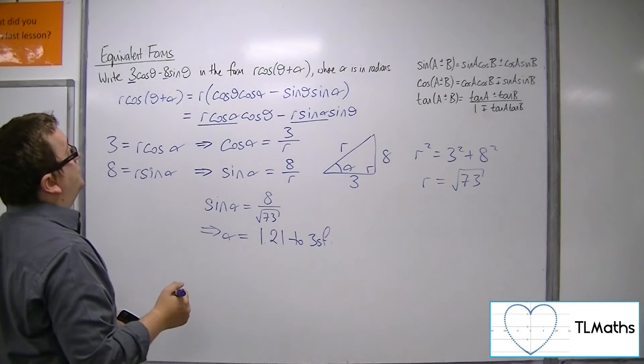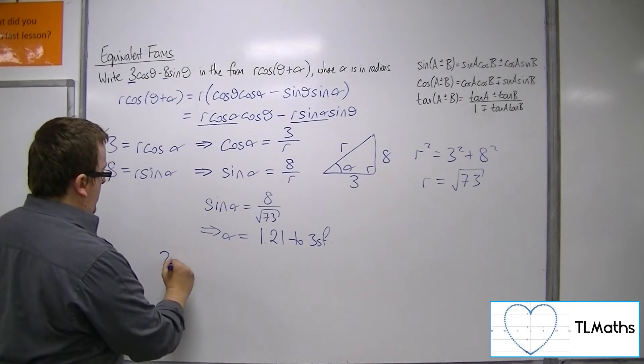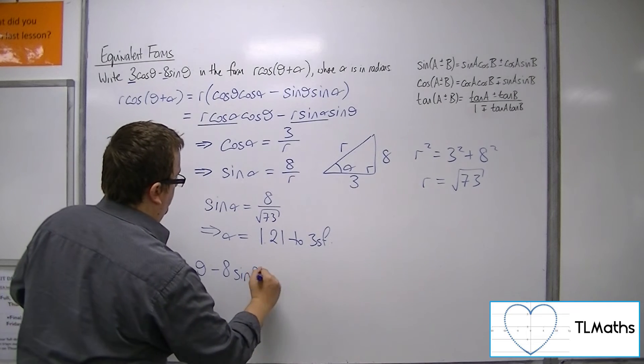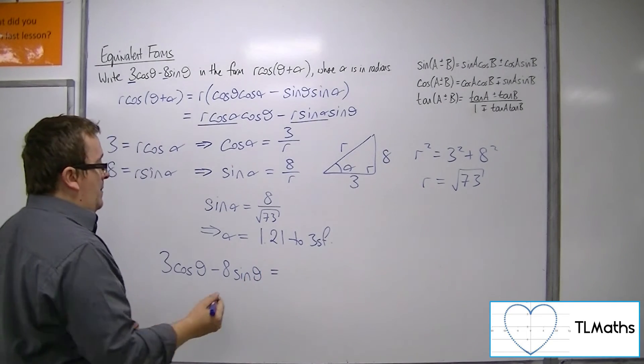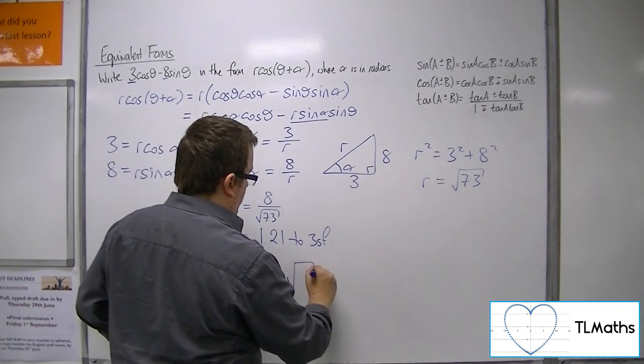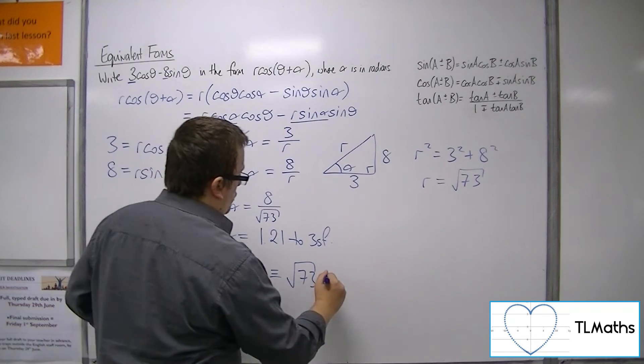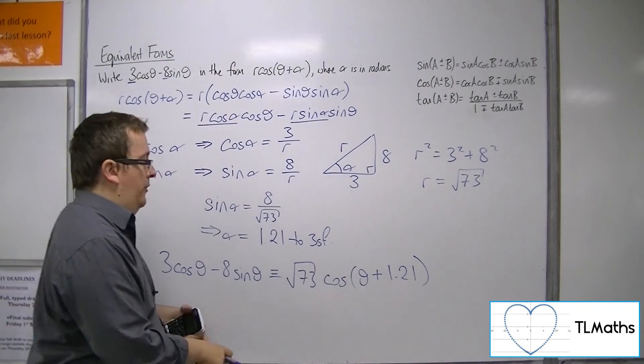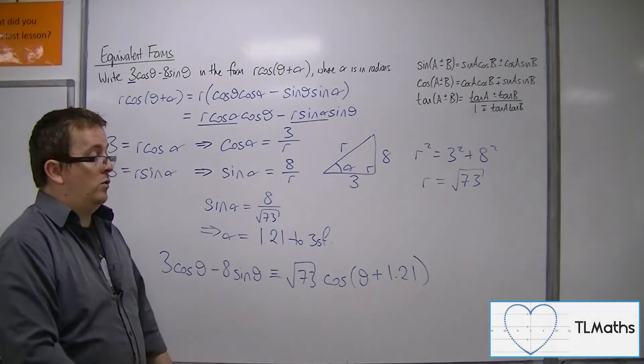And so 3 cos theta minus 8 sine theta is the same as root 73, cos of theta plus 1.21 to 3 significant figures, as required.